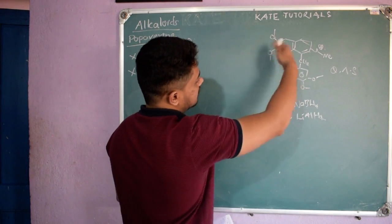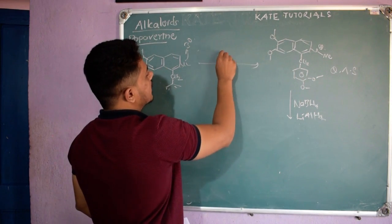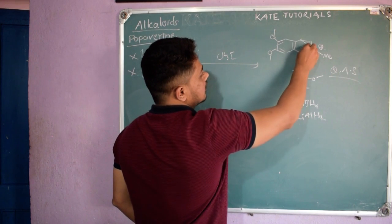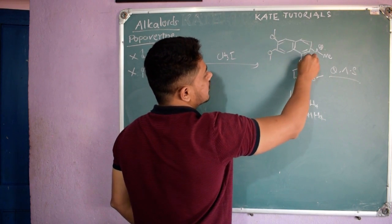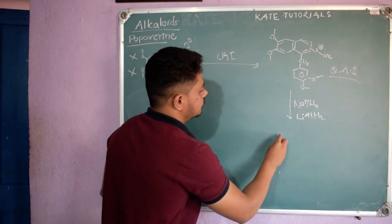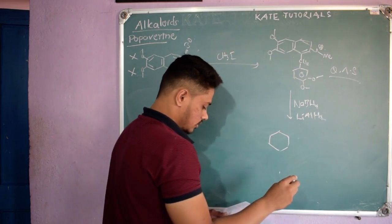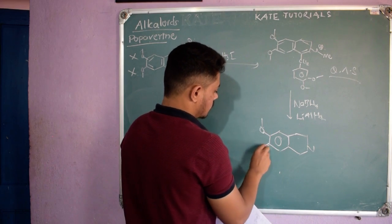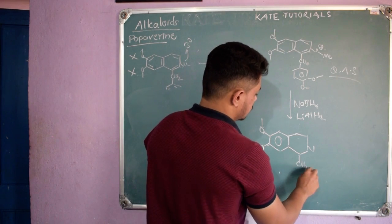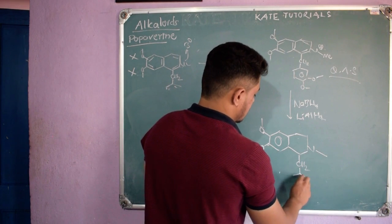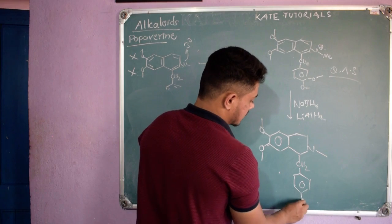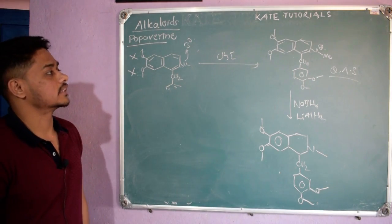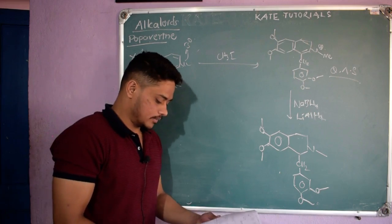...the reducing agent acts on the quaternary ammonium salt of papaverine formed with CH₃I. The pi bonds in the ring are reduced — hydrogens are added across them. The product retains OMe, OMe, CH₂, methyl, and benzene ring with OCH₃, OCH₃. The pi electrons are replaced by incoming hydrogens, giving the reduced ring structure.